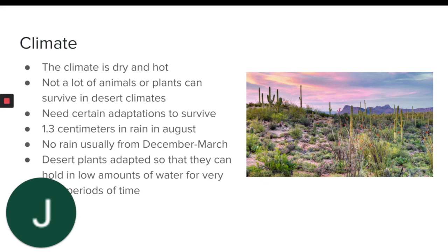People think that deserts are dead land and that not many things, besides cacti, snakes, and sand, inhabit them, but that is far from the truth. The Sonoran Desert alone is home to around 500 species of birds, 130 species of mammals, over 100 reptile species, and around 2,500 plant species. Deserts are not completely void of water 365 days of the year — they receive around 25 centimeters of precipitation each year, with most rain in August at about 1.3 centimeters. There is usually no rain from December to March. Desert plants are unique in that they can hold very little available water for a long period of time.